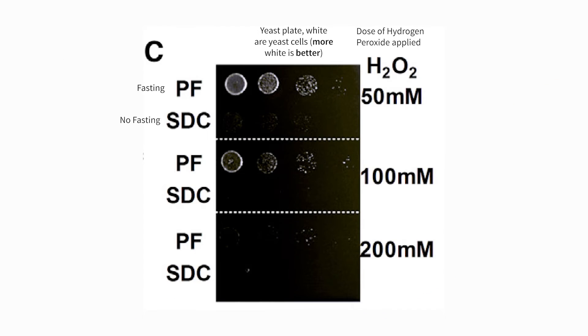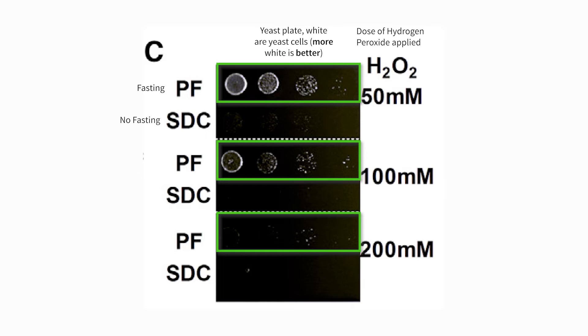Finally, figure 1C looks at the robustness of these yeast cells' ability to survive in an incredibly toxic environment — hydrogen peroxide. They used different dosages of hydrogen peroxide and found that with increasing dosages, consistently the fasting yeast were far more able to survive — actually 100 times more able to survive — compared to the non-fasting yeast. Can we translate that to humans? Probably not. But it's a compelling experiment showing that fasting causes profound changes within cells that confer this robustness and ability to survive in a highly stressful environment.